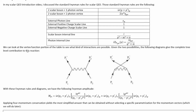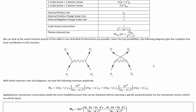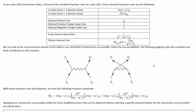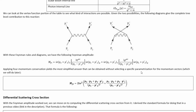We can look at the vertex function section of this table — these two entries here — to see what kind of interactions are possible. Given those two possible interactions, the following diagrams give the complete tree-level contribution to Møller scattering in scalar QED. These two are the ones you remember from standard QED. In the case of Møller scattering, the extra interaction that shows up in scalar QED doesn't actually yield an additional Feynman diagram.